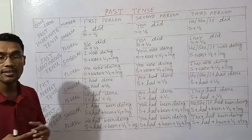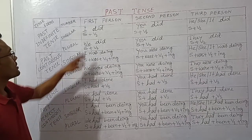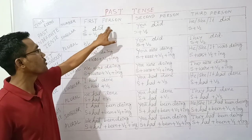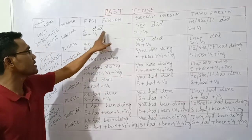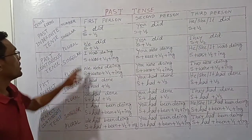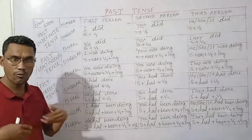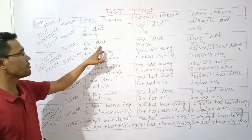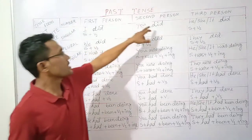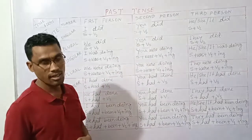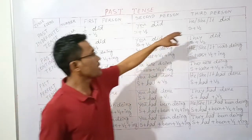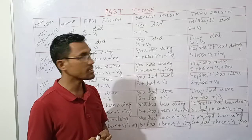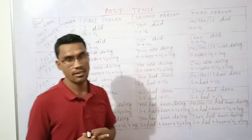For example: 'I did my homework' — subject plus verb second form plus object. For first person plural 'we': 'We did our homework.' For third person singular 'he/she' and plural 'they': 'They did their homework.'